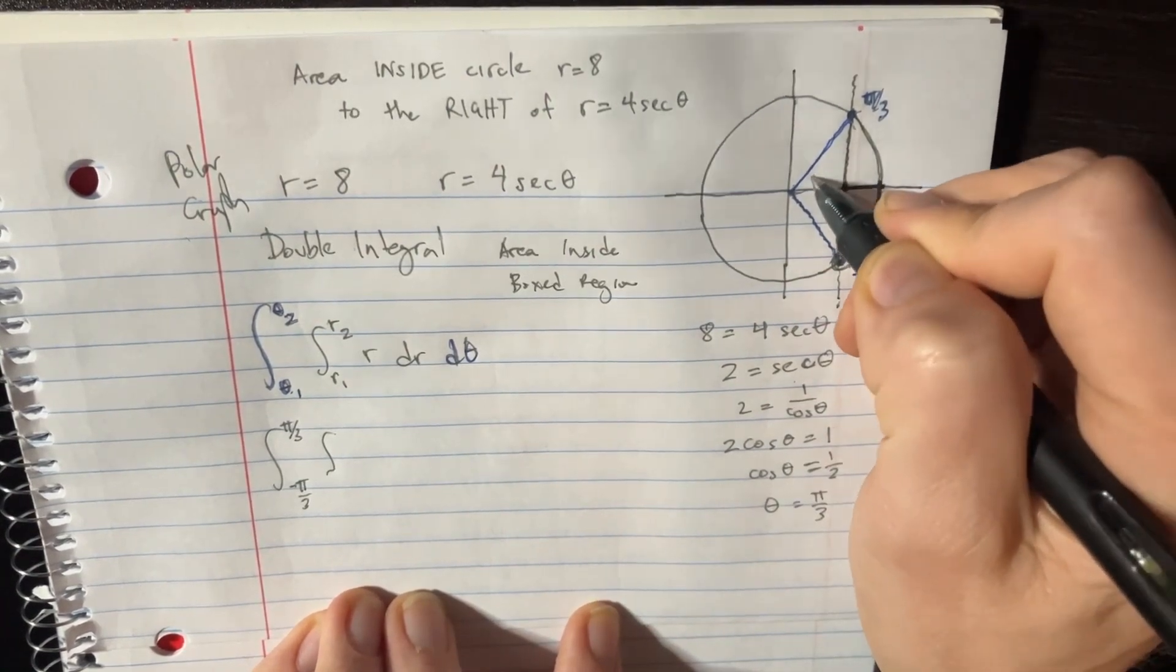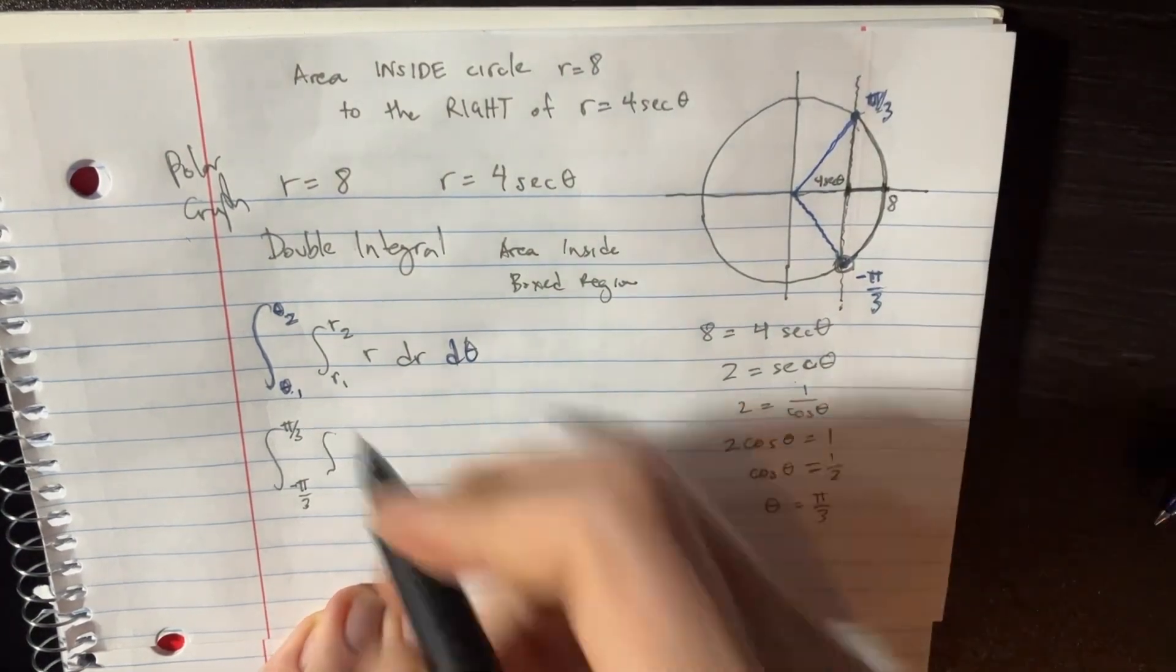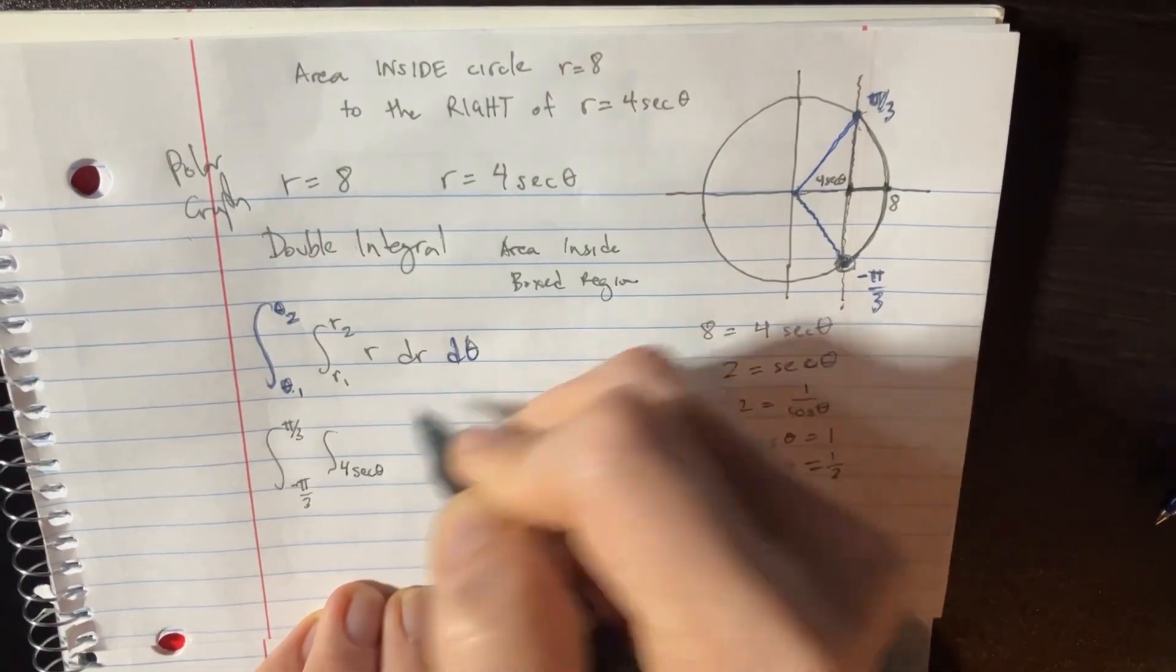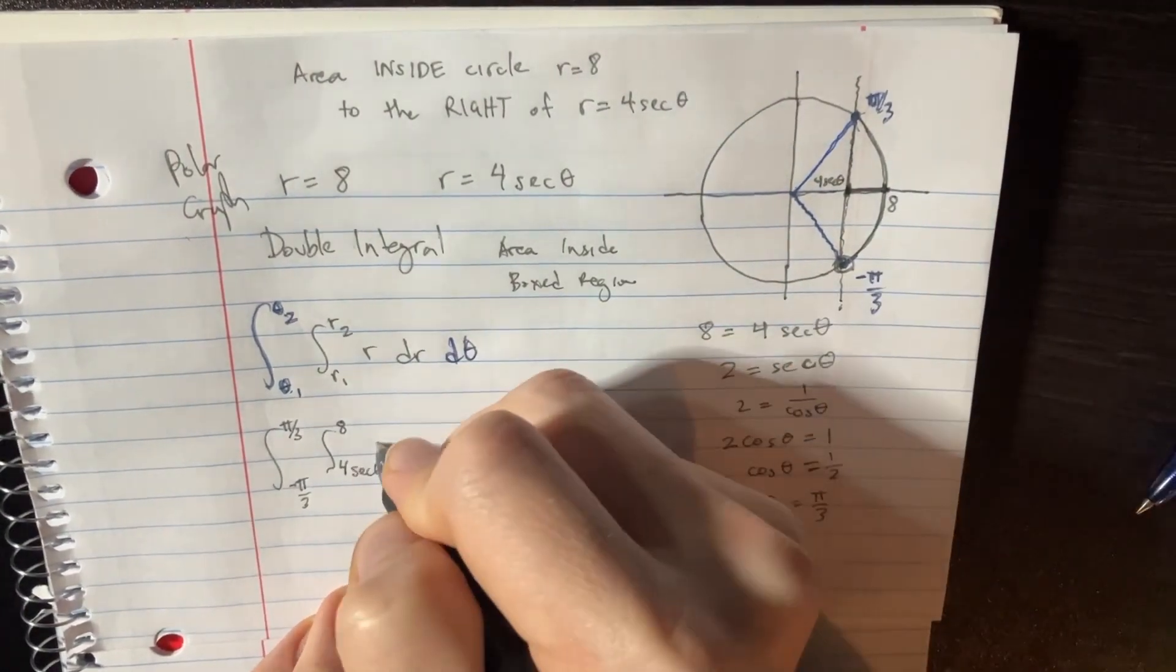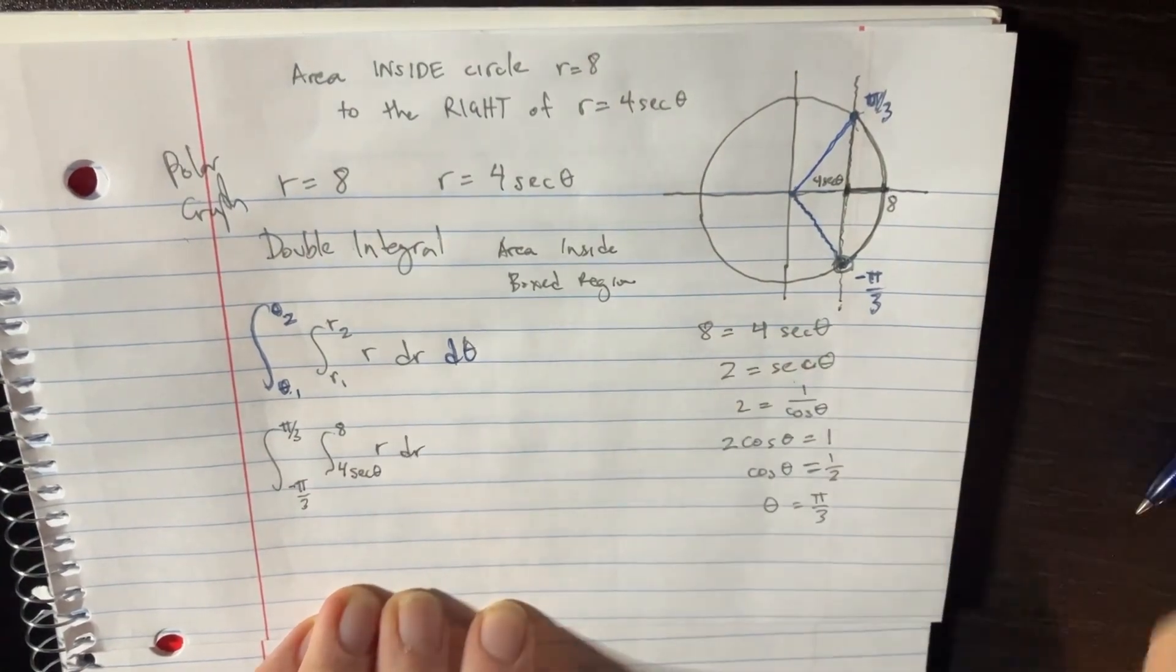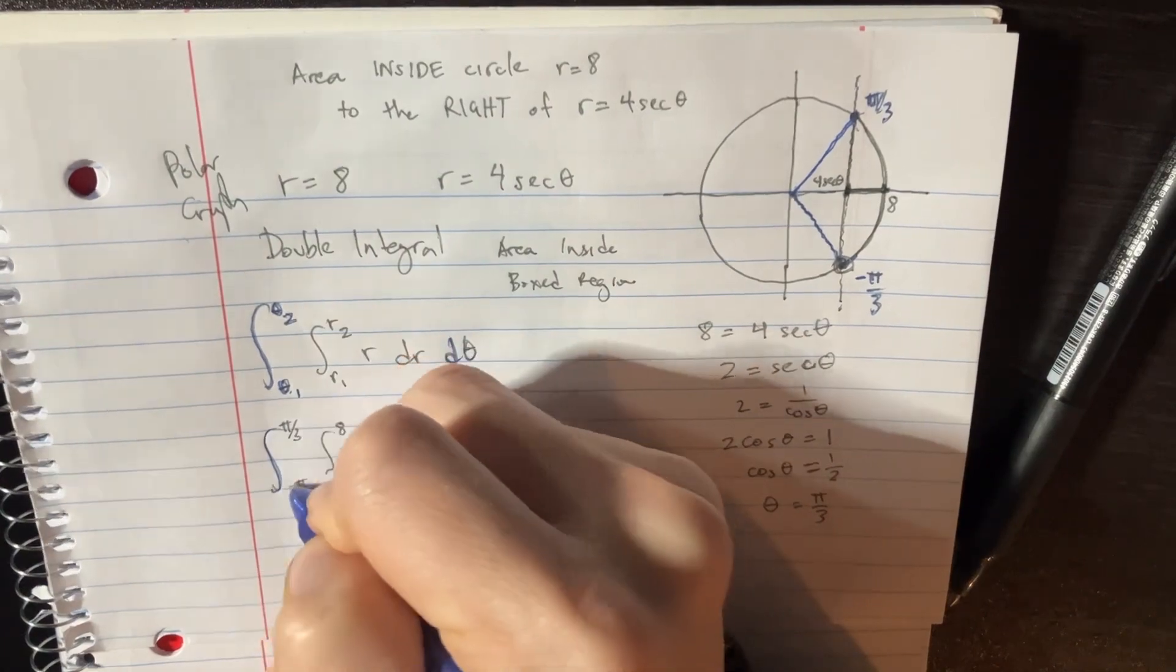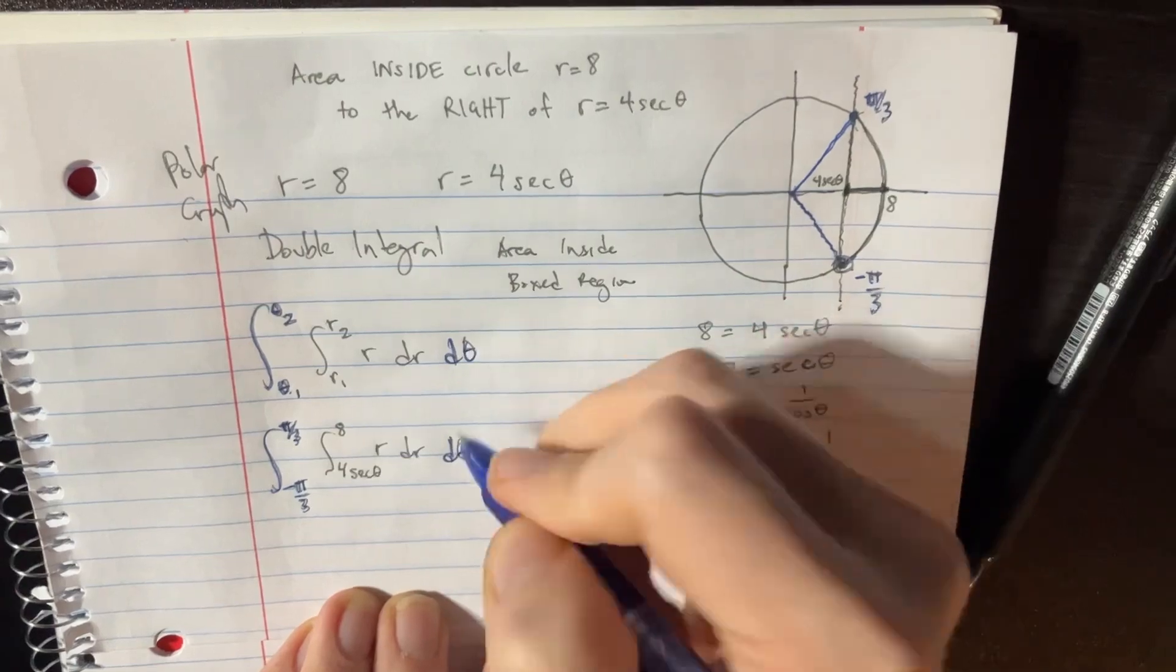And this is just 4 secant theta right here. So that's going to be our extremities of r's. r1 is 4 secant theta and we're going all the way to 8 over here, just like that. This is r dr and then d theta. We're just going to write this blue, negative pi over 3, pi over 3, just to kind of keep things a little bit more organized so you can see there's two integrals going on here.